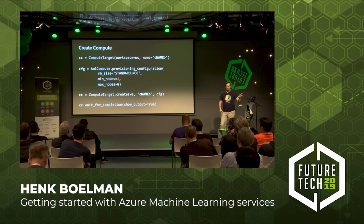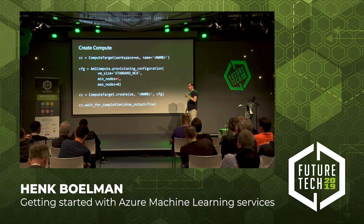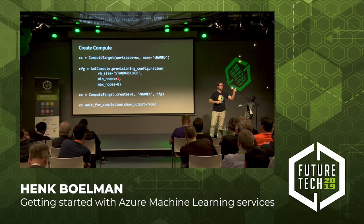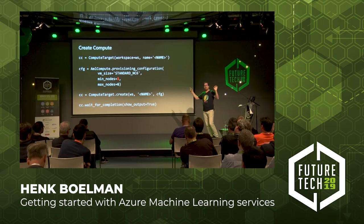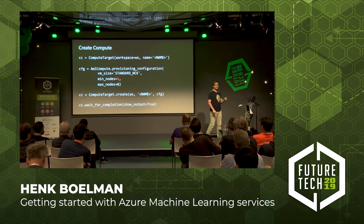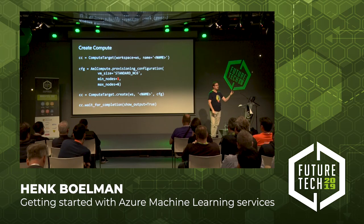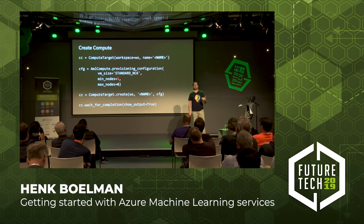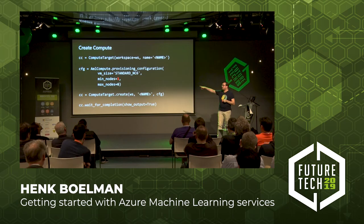The second thing you need is to create the compute that will actually do the deep learning. You create a compute target, give it a name, specify the VM size, and set minimum and maximum nodes — for example, minimum one node, maximum six. This is a Standard NC6 machine with one GPU for deep learning — it costs 600 euros a month if you don't shut it down. Be careful and set minimum nodes to zero, otherwise your boss will not be happy with the credit card bill.